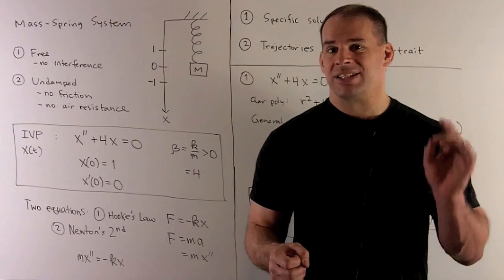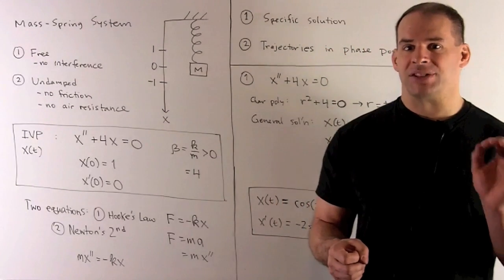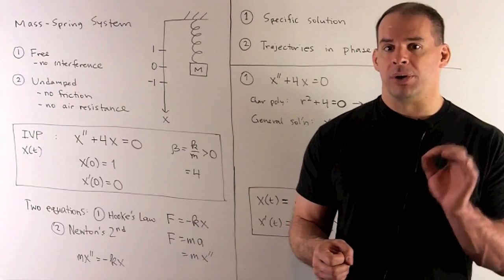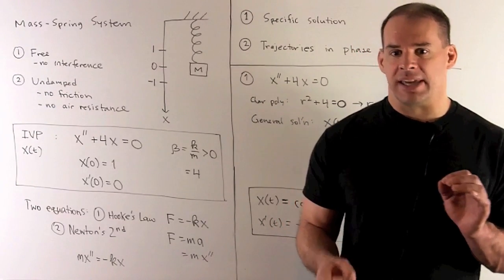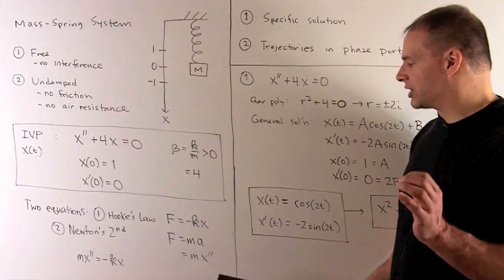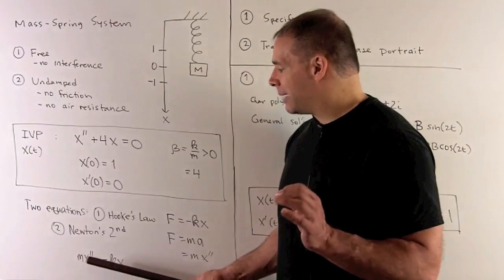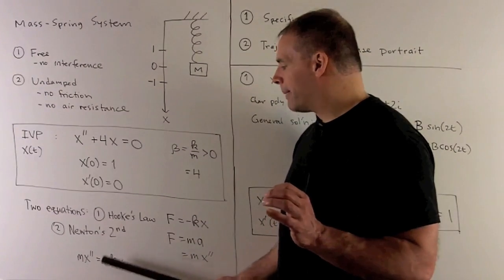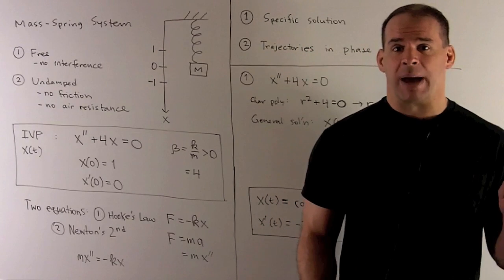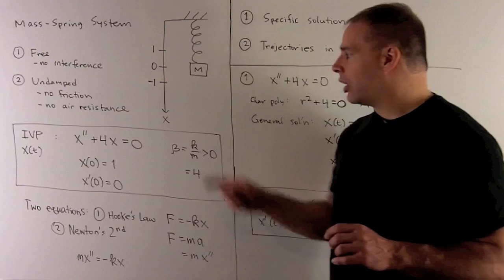Then we have Newton's second law of motion: force equals mass times acceleration. Combining these two equations, and noting that acceleration is the second derivative of X, we get M times X double prime equals minus K times X. Dividing both sides by M and moving everything to one side gives us our ODE.